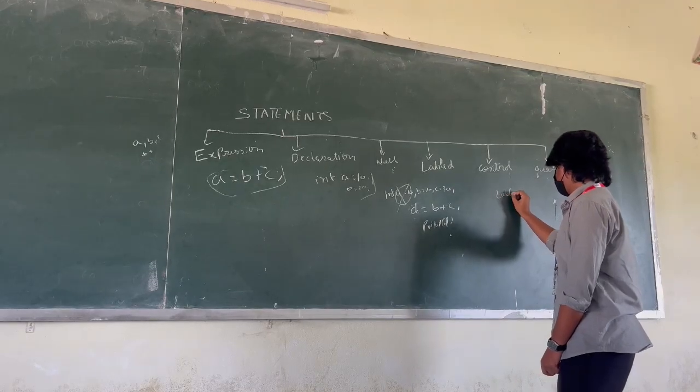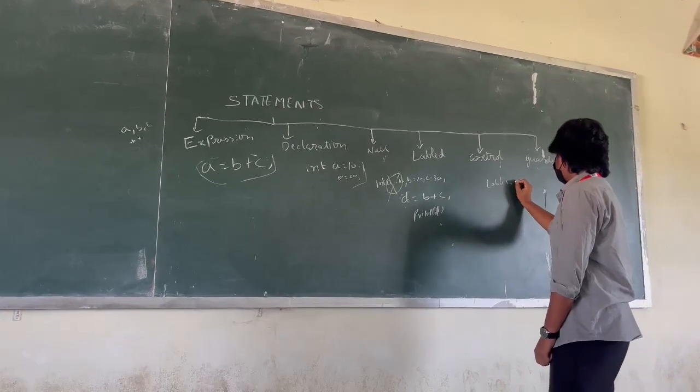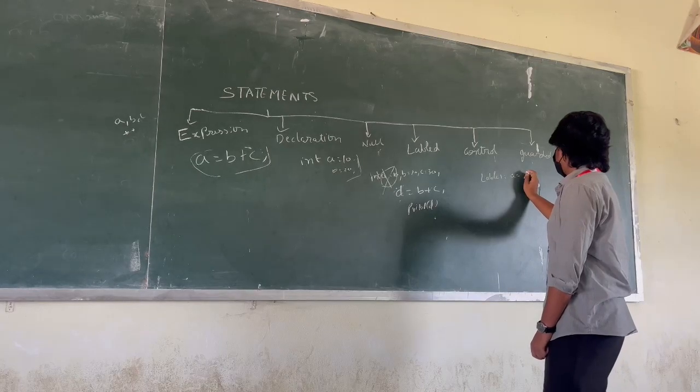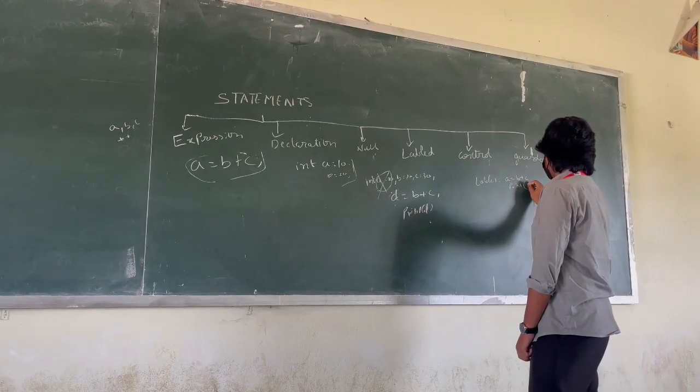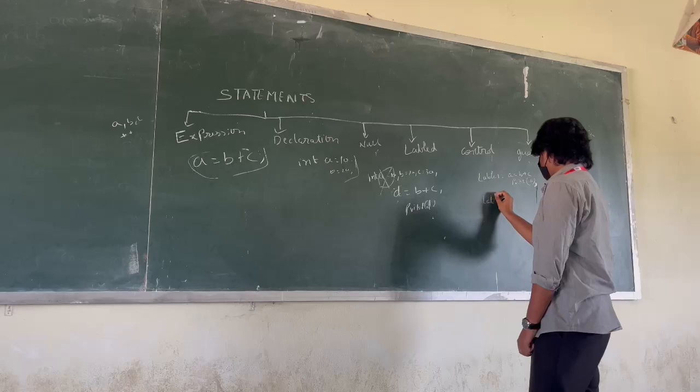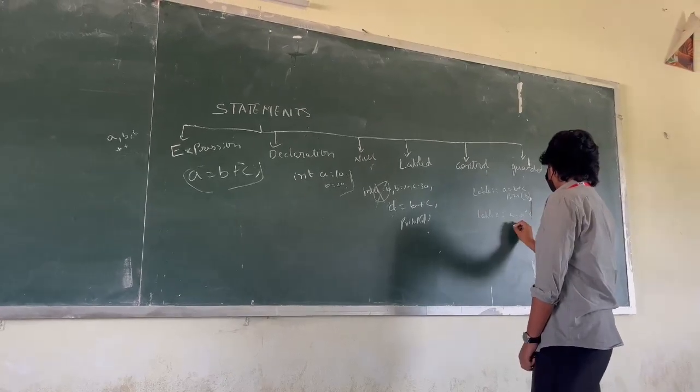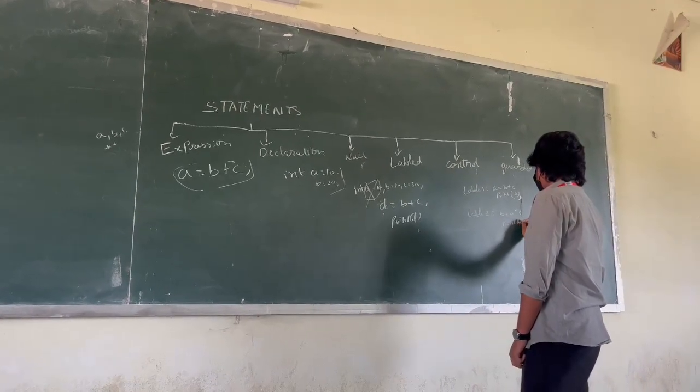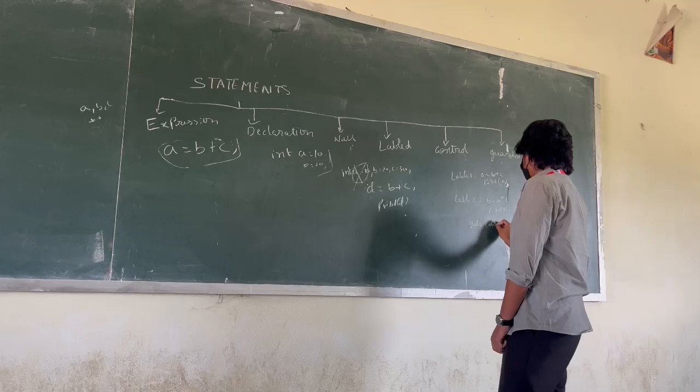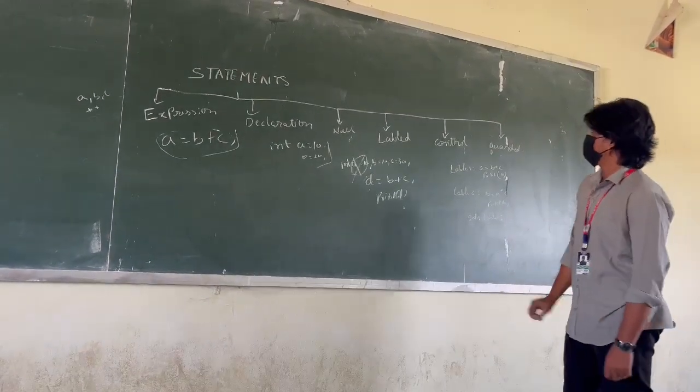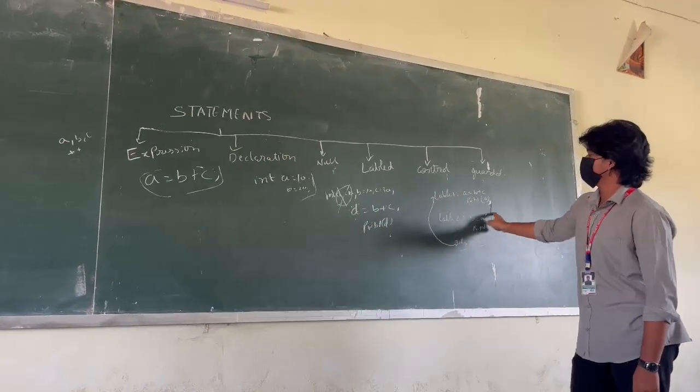By using the label code, you see there, print. That means the code is added. Here we are telling go to level 1. We directly go to level 1. Here no need of level 2 checking.